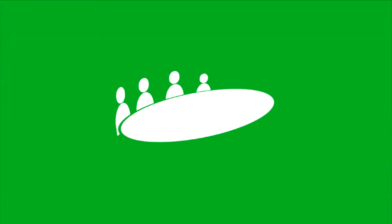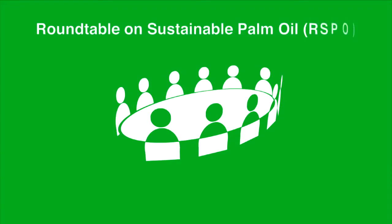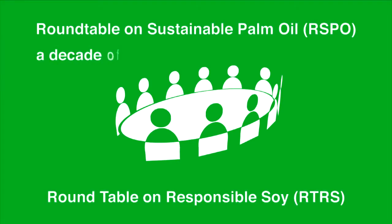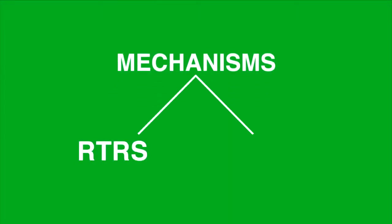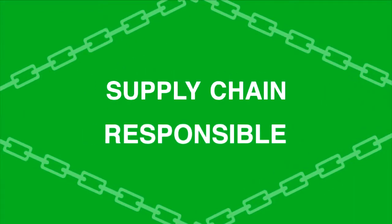These negative impacts have triggered civil society organizations to push, and at times cooperate with the private sector and governments, to improve legislation, promote responsible land use, and set up certification mechanisms like RTRS and RSPO to work towards making the supply chain more responsible.